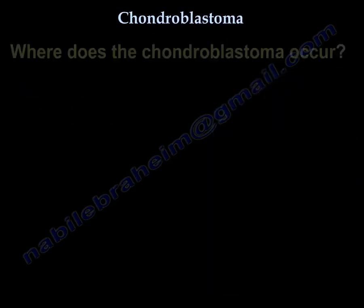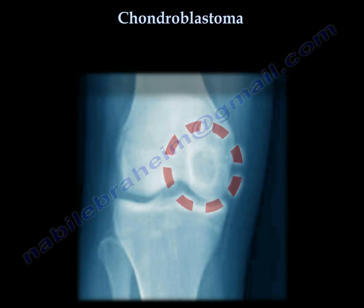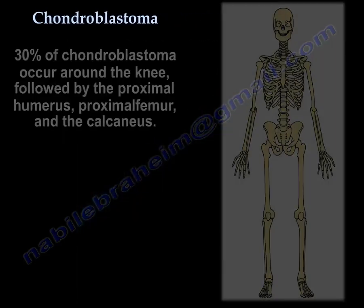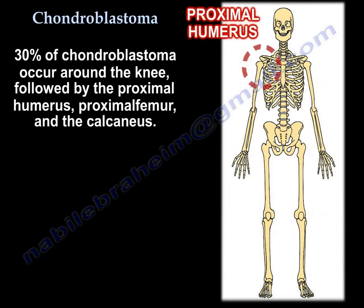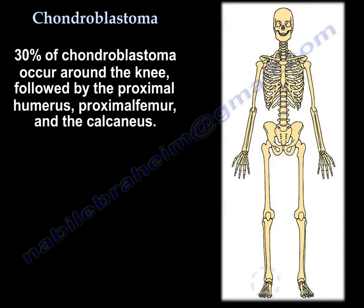Where does chondroblastoma occur? The distal femur and the proximal tibia are common locations. 80% of chondroblastoma occurs around the knee, followed by the proximal humerus, proximal femur, and then the calcaneus.